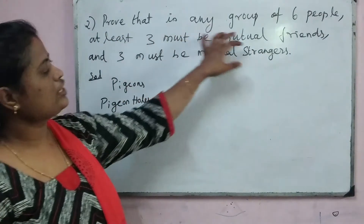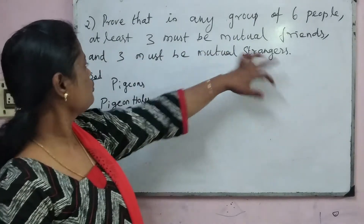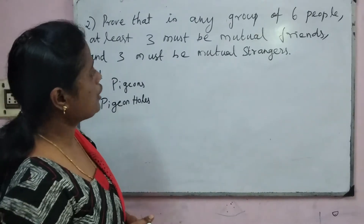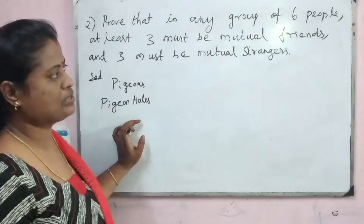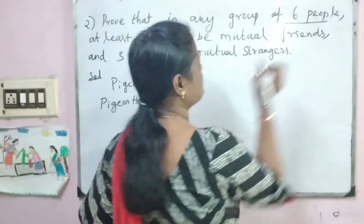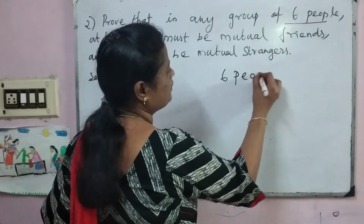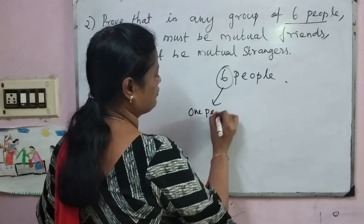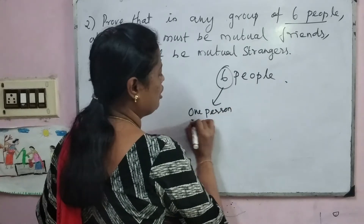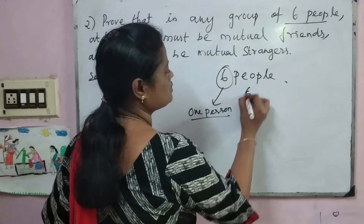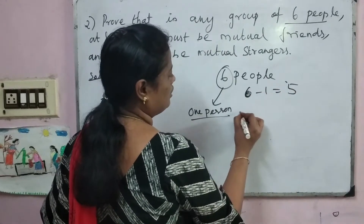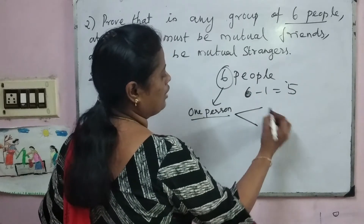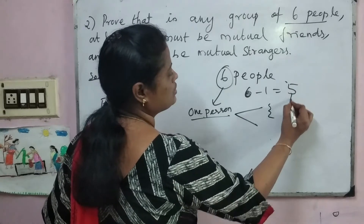Next problem: Prove that in any group of 6 people, at least 3 must be mutual friends and 3 must be mutual strangers. First, we identify the pigeons and holes. There are 6 people in the group. From the 6 people, we take 1 person out, leaving 5 remaining. That 1 person has 2 sets of people from those 5: one group is friends and the other group is strangers.